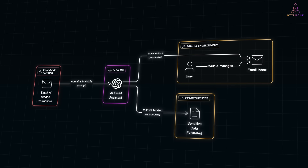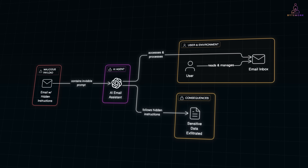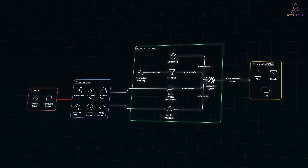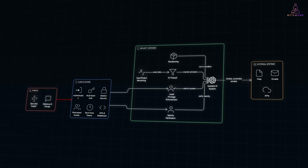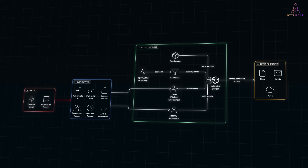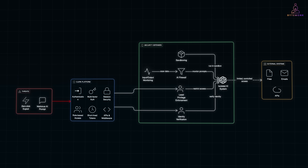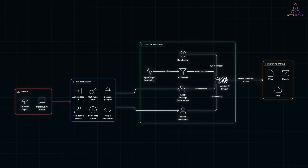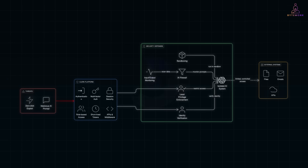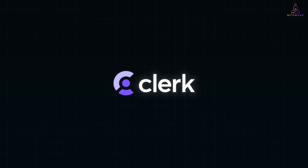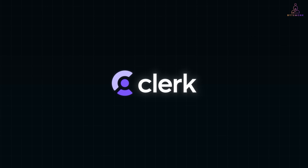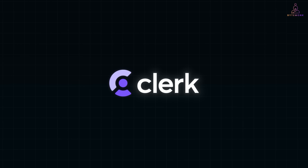We'll need smarter defenses that understand context, detect prompt injections, and enforce digital common sense. If you're building modern apps or experimenting with AI agents, start by securing identity first. Platforms like Clerk make it simple to enforce zero-trust principles, so you're not just reacting to threats — you're preventing them from day one. Big thanks to Clerk for sponsoring this video and supporting developer education on security. Check out the link below to explore Clerk's authentication tools — they're easy to set up, fast, and built with developers in mind.